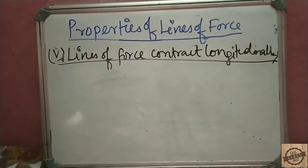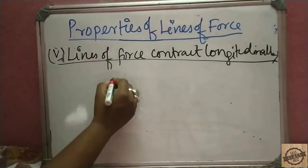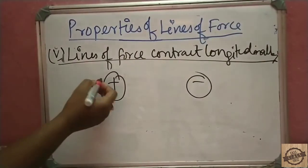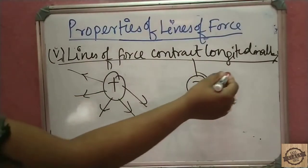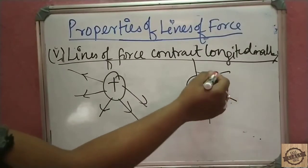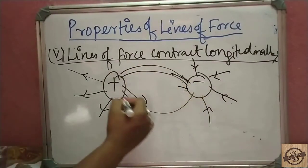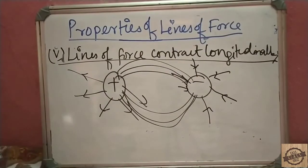The next property: lines of force contract longitudinally. This explains why two unlike charges attract each other. A positive charge and a negative charge connected by lines of force — the lines contract longitudinally, meaning the two unlike charges attract each other.